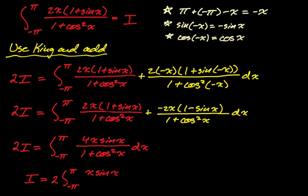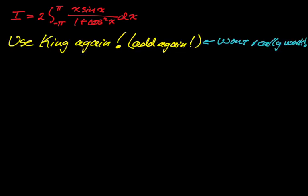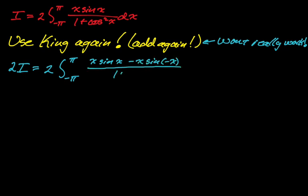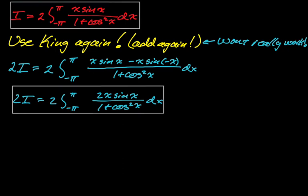This also looks like an integral we'd use King on, so let's try applying King again and adding. The substitution is again negative pi plus pi minus x, so every x becomes negative x. Adding the two copies gives 2 times 2I equals 4 times the integral from negative pi to pi of 2x·sin(x) over 1 plus cosine squared of x dx — which is exactly the same integral we started with. So this approach isn't working.